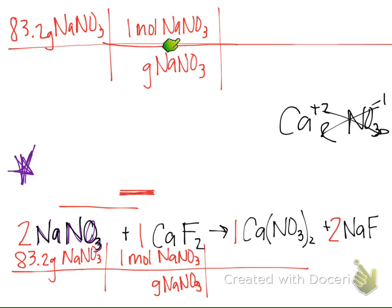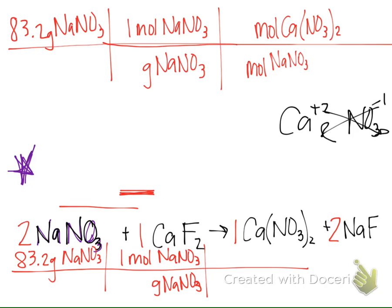After this step in the T-chart, we go to a mole-to-mole step. Moles of NaNO₃ goes on the bottom, and moles of calcium nitrate, Ca(NO₃)₂, goes on the top. In this mole-to-mole step, the coefficients from the balanced chemical equation go here — so we get 1 for NaNO₃ and 1 for Ca(NO₃)₂.